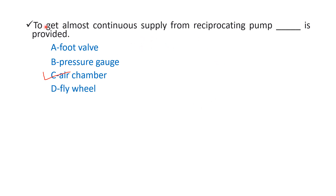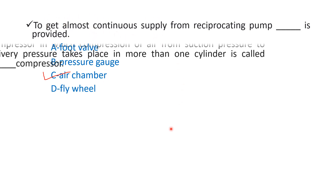To get almost continuous supply from a reciprocating pump, we provide an air chamber. Air chamber continuous supply provide karta hai, isliye reciprocating pump mein air chamber provide kiya jaata hai to get almost continuous supply.